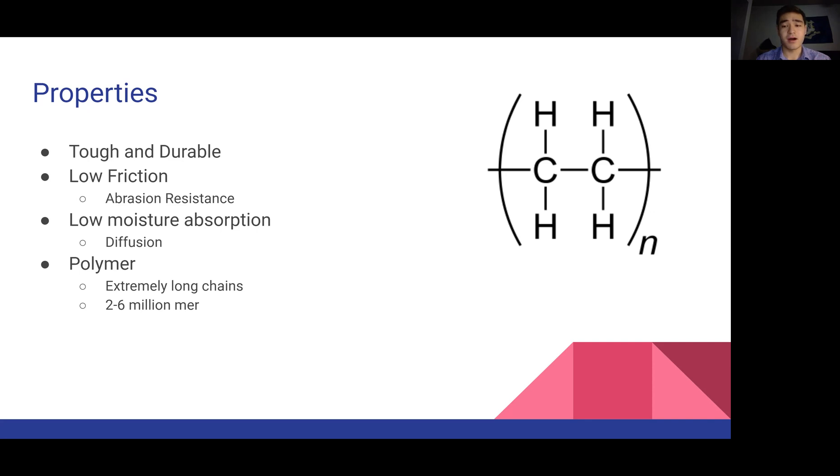And finally, it is a polymer, so this aligns most closely with chapter four. Ultra-high molecular weight polyethylene has extremely long chains and two to six million mer or units. And this can be seen in the structure here on the right. That is one mer or one unit of ultra-high molecular weight polyethylene.